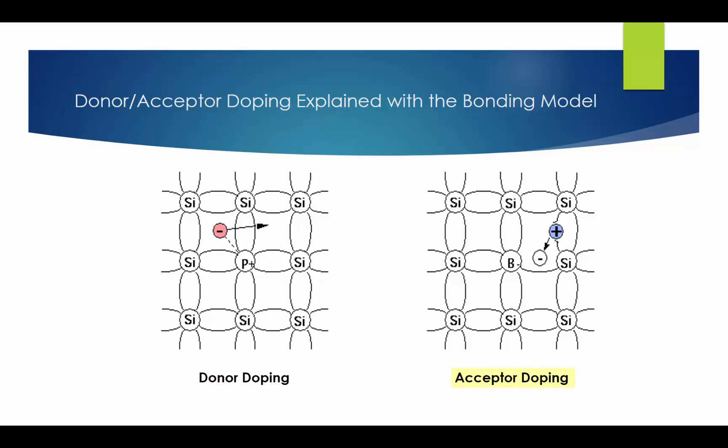We use column 3 elements as dopants in acceptor doping. Column 3 elements such as boron have only 3 valence electrons. When a boron atom is substituted for a silicon atom in the crystal, it can only complete 3 covalent bonds with its 4 neighbors, thus leaves one hole, i.e. a missing bond in the crystal. As we have explained in previous videos, other nearby electrons can be attracted into this hole and leave behind another missing bond in its original place. Thus, this empty hole can be treated as if it can move freely on its own.